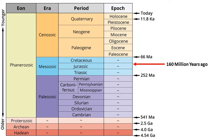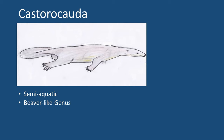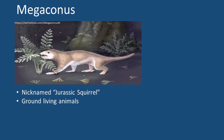This is seen in the extremely well-preserved fossils of Castorocauda and Megaconis. Castorocauda was a semi-aquatic, beaver-like genus that possessed a fur pelt, and although this mammalian form is not a direct ancestor of modern day mammals, it is an extremely close relative. The Megaconis has been nicknamed the Jurassic Squirrel — a group of ground-living animals which may be the most primitive mammalian forms to possess fur. The evolutionary journey of hair through time is still relatively unknown, but it has without a doubt been a major player in the success of this group.